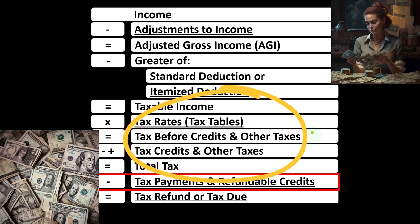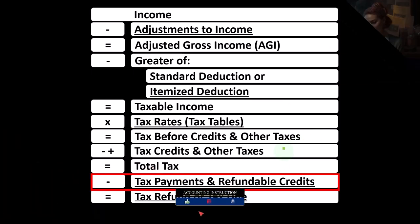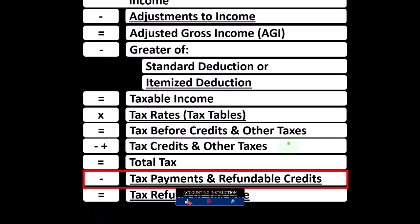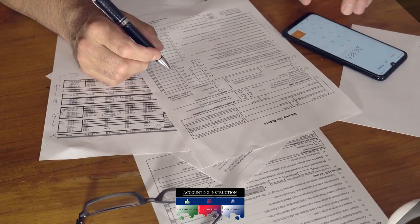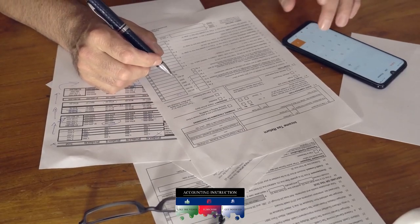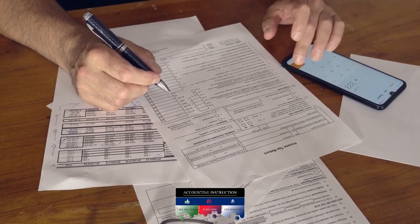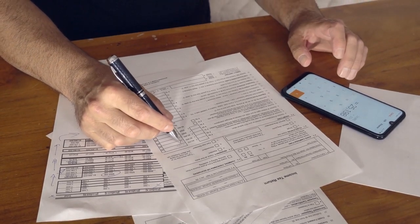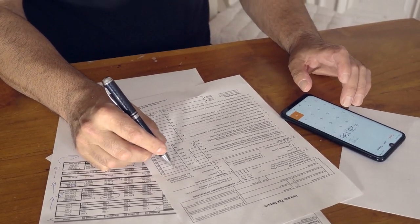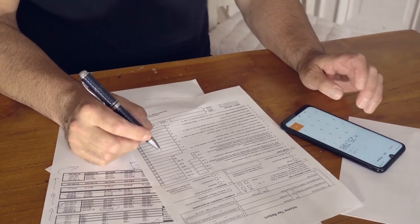We're not done yet because now we have the credits to deal with, which can be broken out between non-refundable and refundable credits, as well as other taxes, which might include the self-employment tax. That will get us to our total tax, and then we have to think about the payments that we have made as well as refundable credits.